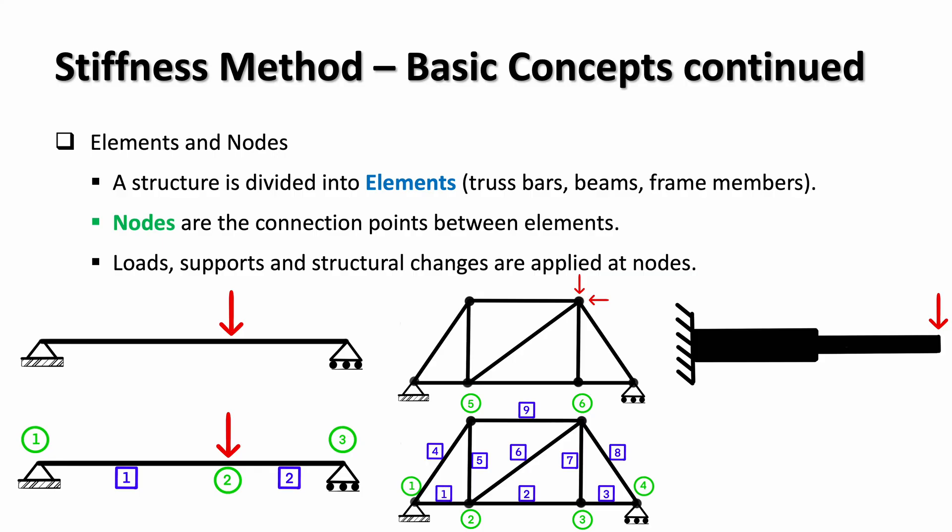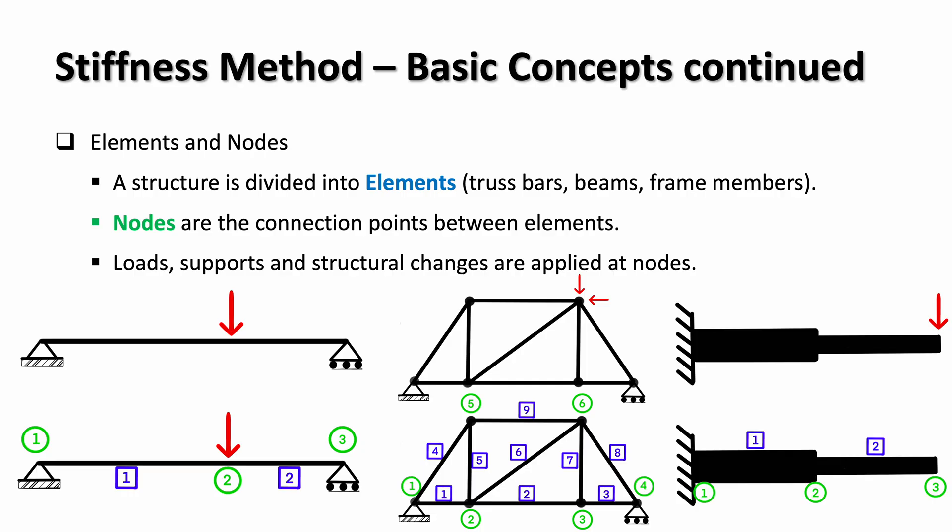This is a cantilever with a point load at the end, but note that in the middle there is a change of cross-section. That change of cross-section means that I do need to add a node at that point of interest. Each element will have its own stiffness matrix that defines how it resists deformation, as well as physical properties such as length, cross-sectional area, and the material stiffness, which is typically represented by Young's modulus. The behavior of the entire element can then be determined by how its end nodes displace under load. By focusing on nodal displacements and nodal forces, the stiffness method allows us to represent the entire structure in terms of a set of matrices.